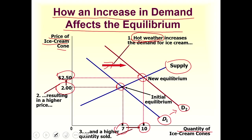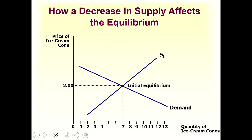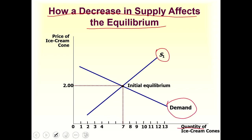Now let's see another example: how a decrease in supply affects the equilibrium. This is the initial supply curve and the initial demand curve. On the x-axis we have the quantity of ice cream, on the y-axis the price. The initial equilibrium has a price level of 2 and a quantity sold of 7 — the same as before. Now instead of changing the demand curve, we are going to shift the supply curve.